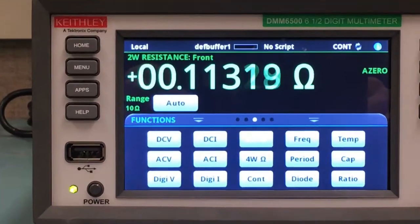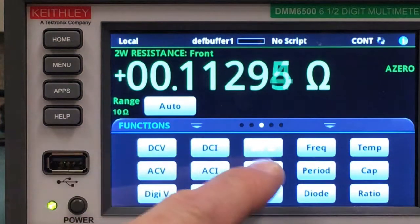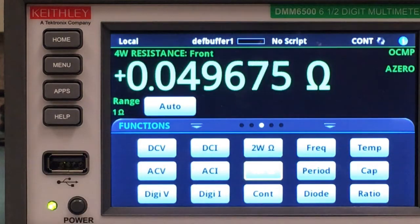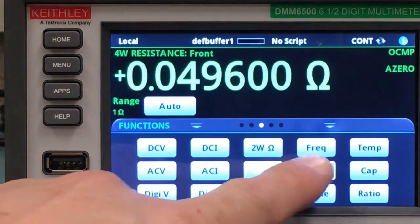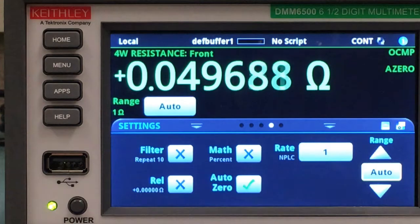I can then change my measurement function to four-wire, and you can see that we are very near the target value of 50 milliohms. Let's see if we can make that a little more eye-pleasing by applying a filter.